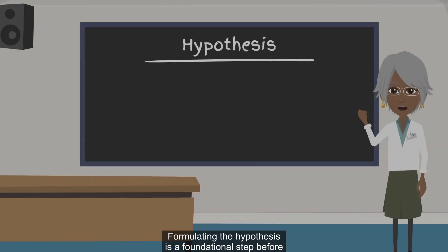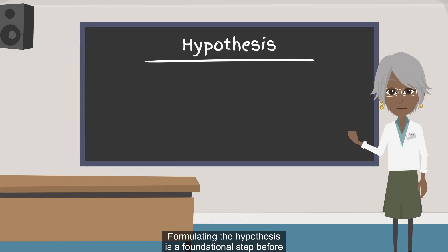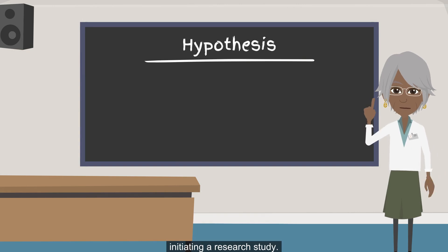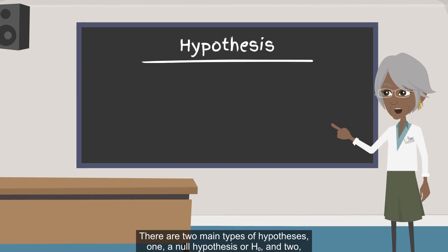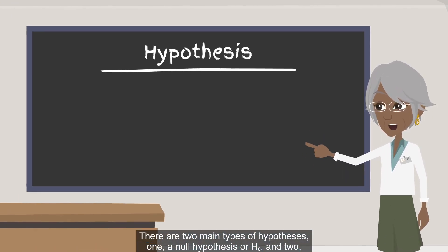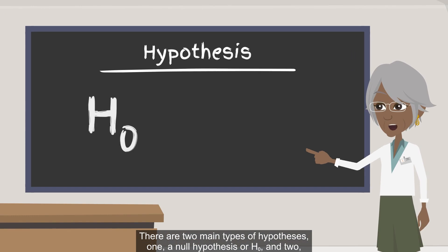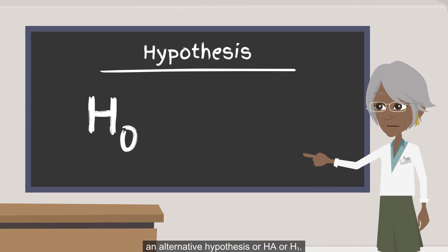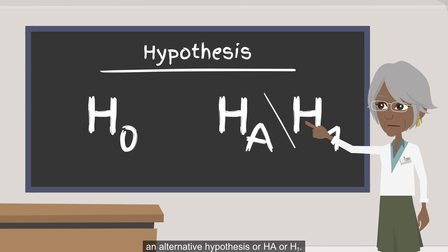Formulating the hypothesis is a foundational step before initiating a research study. There are two main types of hypotheses: one, a null hypothesis, or H0, and two, an alternative hypothesis, or HA or H1.